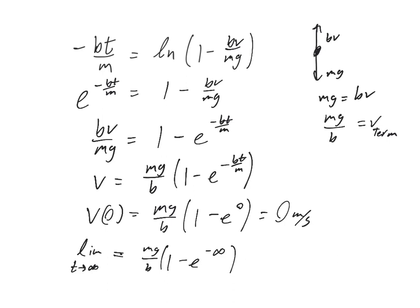So, we've got then mg over b times 1 minus e to the negative infinity, essentially, right? So, that's 1 over infinity. That's 0. So, we have 1 minus 0 inside our parentheses, which gives us 1. So, we end up with mg over b. Same thing that we got, doing it the easy way. So, our equation seems to make sense. We're done.